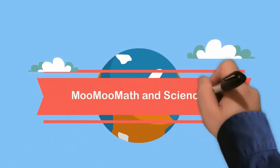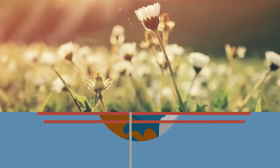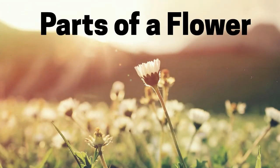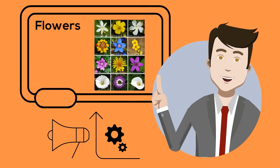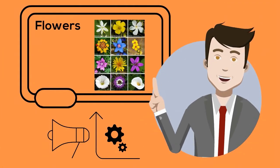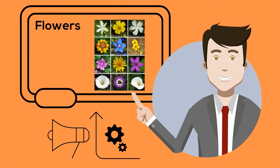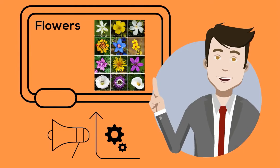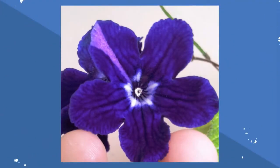Welcome to Moo Moo Math and Science. In this video I would like to talk about the parts of a flower. Flowers come in many shapes and sizes, but they are all used for reproduction of angiosperms.